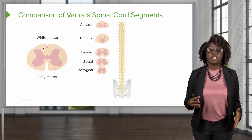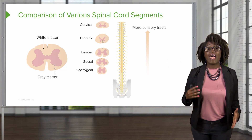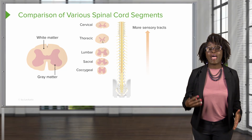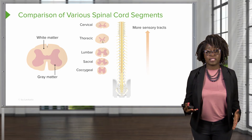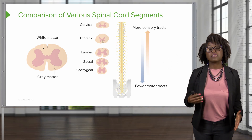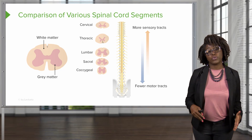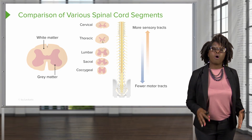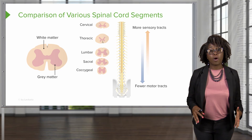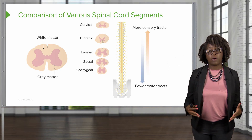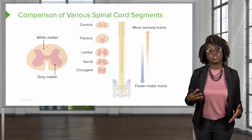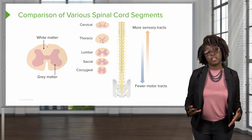This is because of two main reasons. As you ascend, you are going to add more sensory tracts, and as you descend, you have less motor tracts. You will also notice that the cervical and lumbar have the largest amount of gray matter. This is because they are responsible for innervating the limbs.